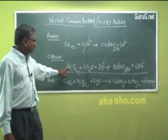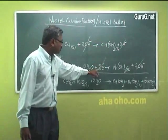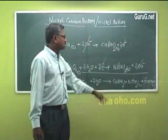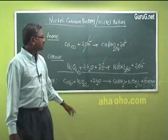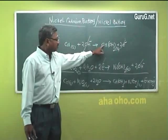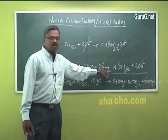At the cathode, nickel oxide reacts, takes up these two electrons to form nickel hydroxide and of course two OH- ions. This cadmium hydroxide and nickel hydroxide are solids.